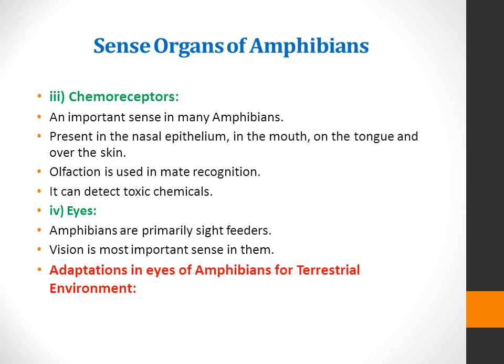In amphibians, chemoreceptors are important sense organs because they are present in the nasal epithelium, and may also be present in the mouth, on the tongue, and over the skin. Olfaction is used in mate recognition and can detect toxic chemicals.